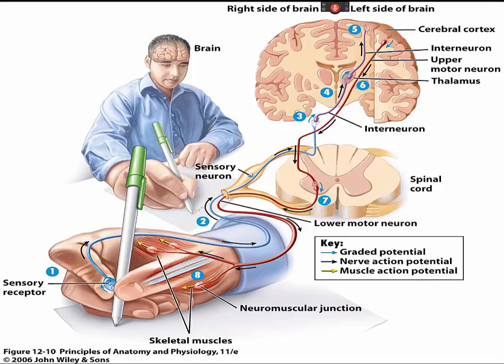Nerves that connect the spinal cord with other parts of the body are called spinal nerves. The brain communicates with most of the body through the spinal nerves. Several cranial nerves and most spinal nerves are involved in both the somatic and autonomic parts of the peripheral nervous system.